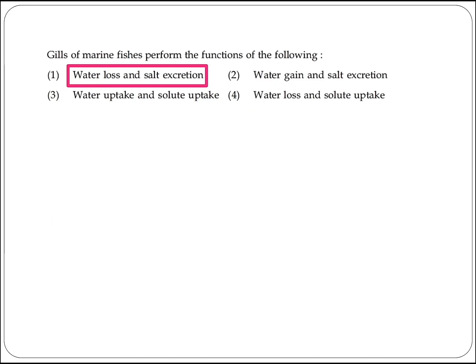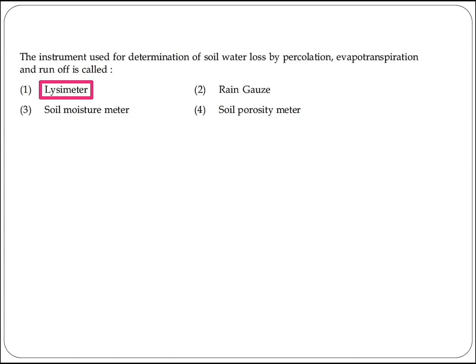The next question asks about the function of gills in marine fishes. They perform the function of water loss and salt excretion. Option 1 is the right answer. The next question asks about the instrument used for determination of soil water loss by percolation, evapotranspiration, and runoff — it is called a lysimeter. Option 1 is the right answer. Thank you.